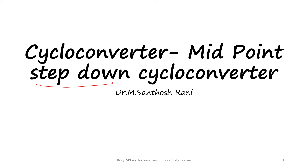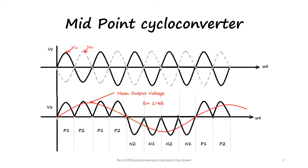Before going into the step down operation, let me explain what stepping down of the frequency means. A cycloconverter is used for changing the frequency. By stepping up, what we mean is that for one cycle of the input voltage we get more number of output cycles. That is stepping up.